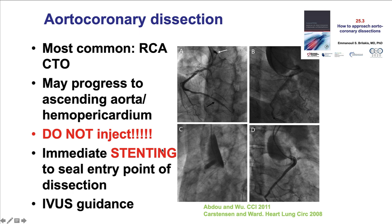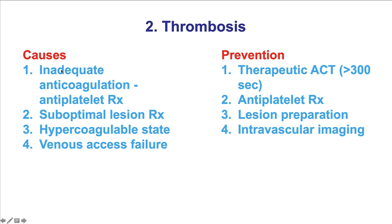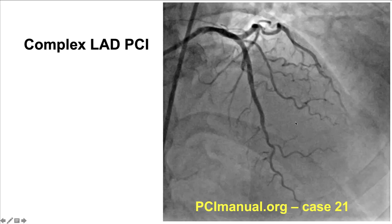Moving on to vessel thrombosis. The most common causes are inadequate anticoagulation and antiplatelet therapy, and suboptimal lesion preparation. One of the major causes of stent thrombosis is a suboptimal result after stenting. How to prevent it? By using optimal anticoagulation — typically ACT should be more than 300 seconds in patients without GP IIb/IIIa inhibitors, and between 200 and 250 seconds in patients on GP IIb/IIIa inhibitors or cangrelor. Ensuring adequate antiplatelet therapy and achieving an excellent result using intravascular imaging to confirm good lesion and stent expansion are also key.